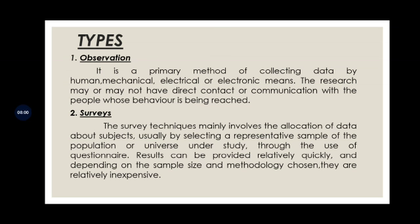Types of descriptive research design: 1. Observation, 2. Surveys. Observation is a primary method of collecting data by human, mechanical, electrical, or electronic means. We observe something we may not otherwise be aware of through human, mechanical, or electrical means.